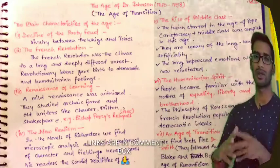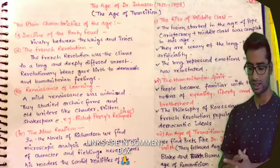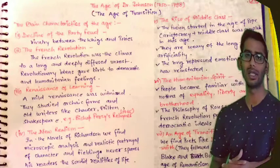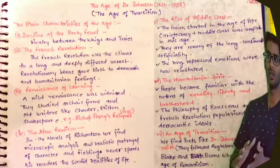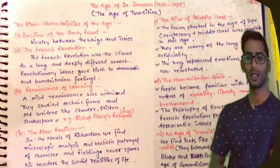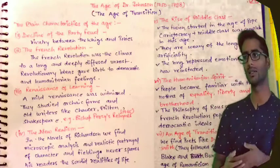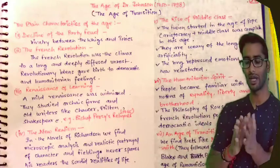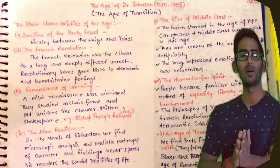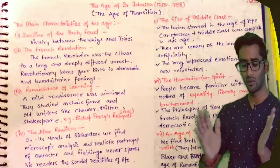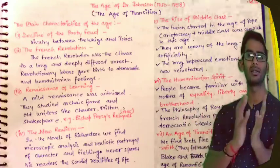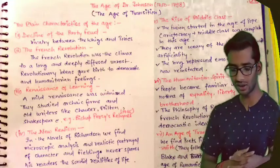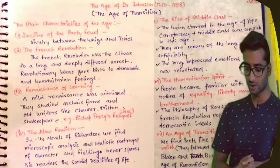This was the Age of Transition. The age of transition is called such because it is a middle period of time that has the qualities of both the preceding and succeeding ages — it has the qualities of both ages — and that is why it is called the Age of Transition.